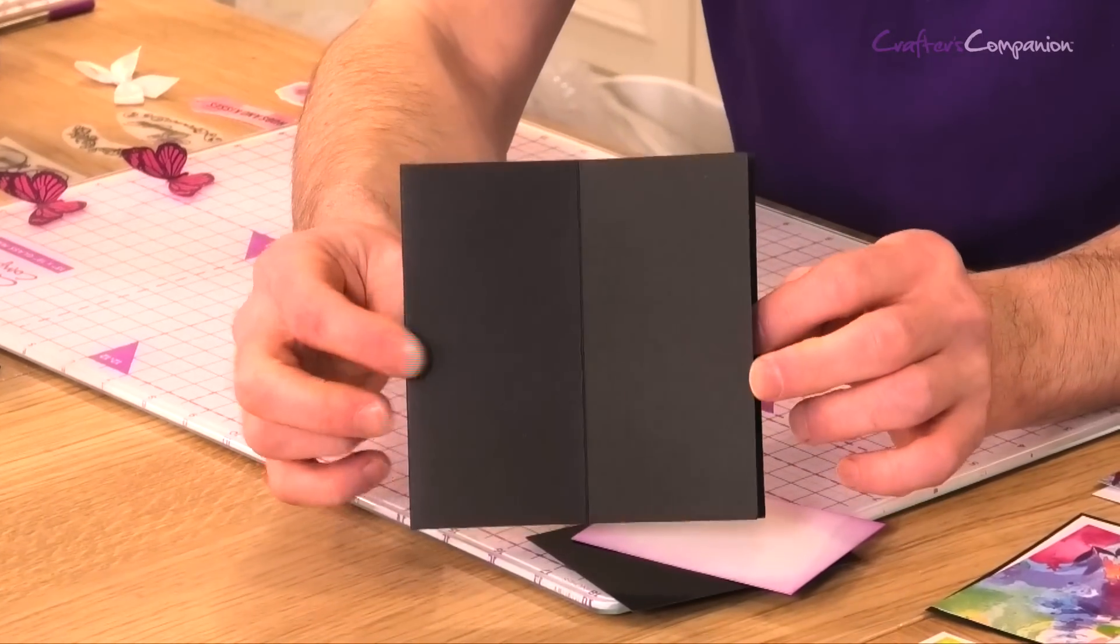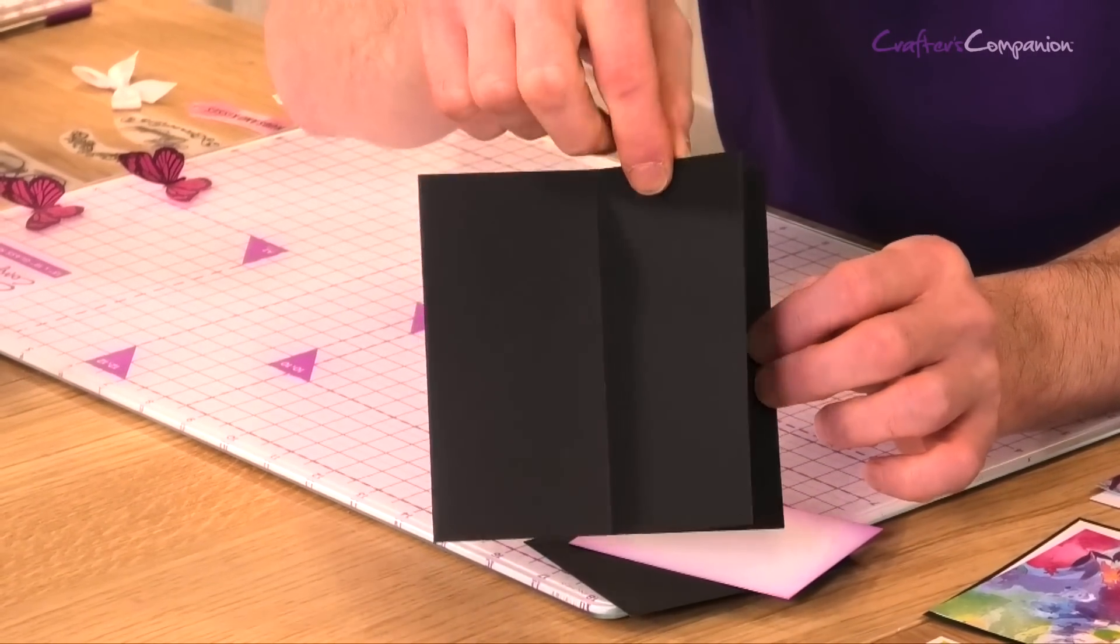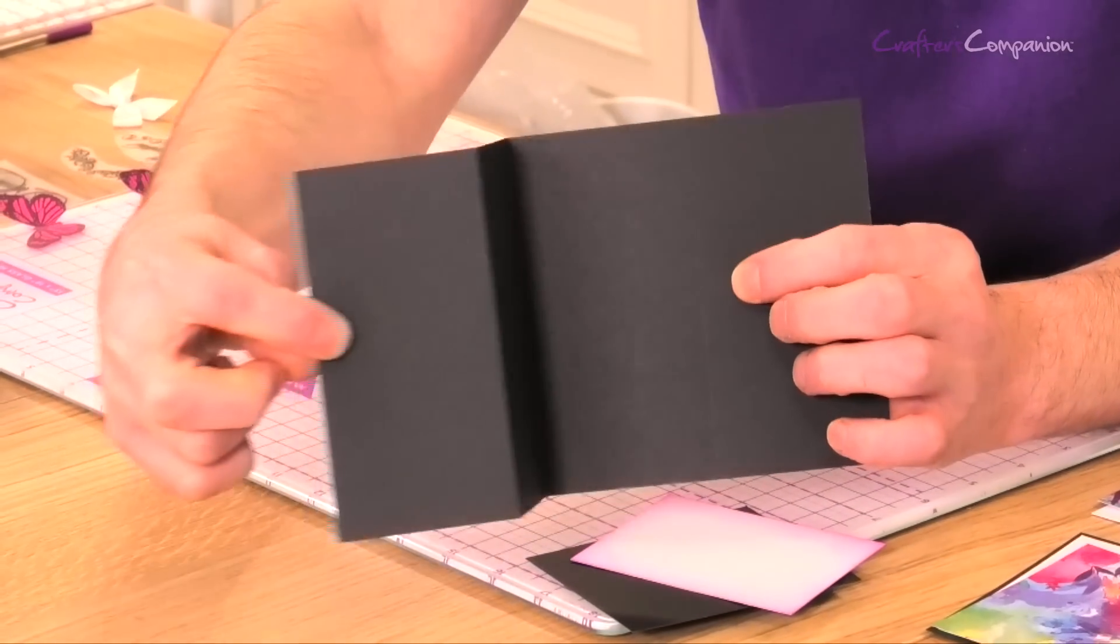So what we've done is we've just taken our 5x5 card blank and then this front one, we've just done a score line right down the middle and then folded it back and that now creates our half side gatefold card.